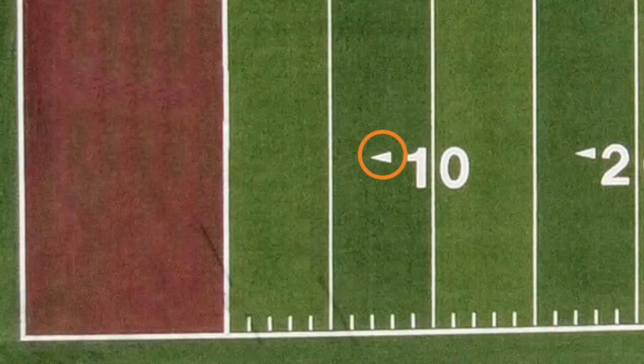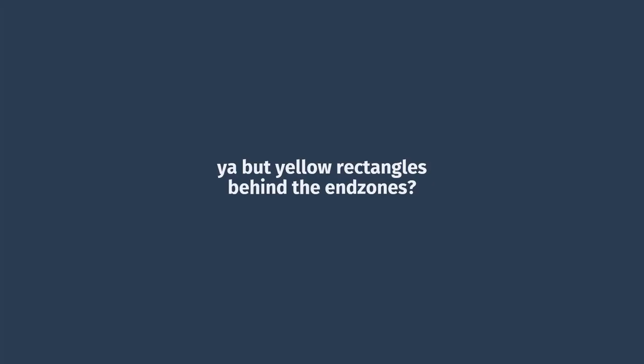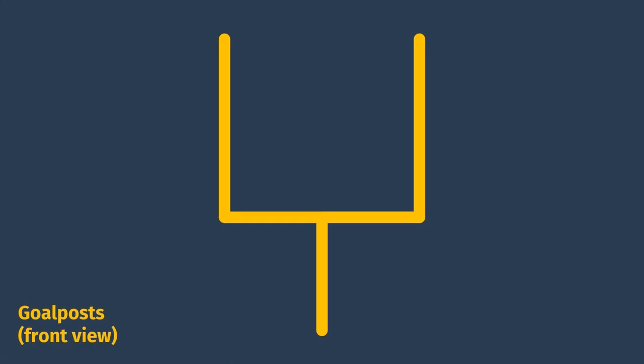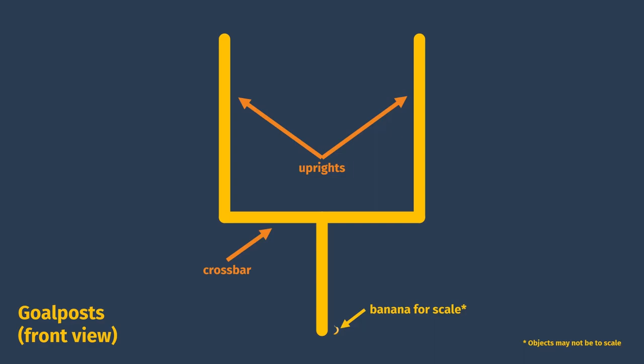Those point to the closest end zone, so you can tell which side you're on, even if you can't see the whole field. Oh, those things? Those are goal posts. There's one at each end. You try to kick the ball through them.